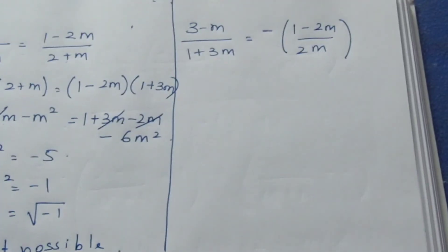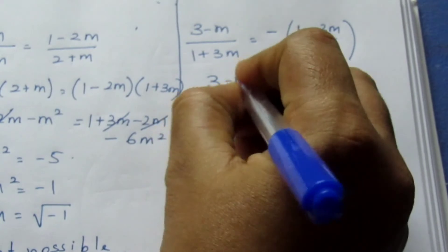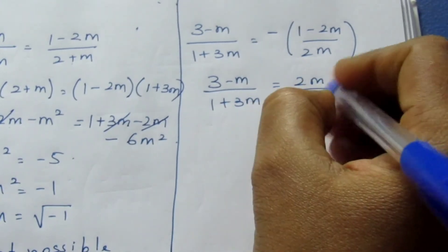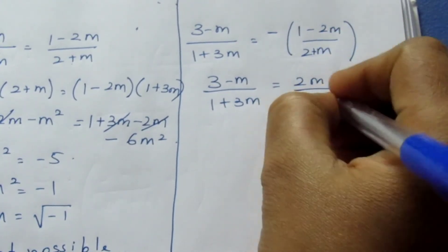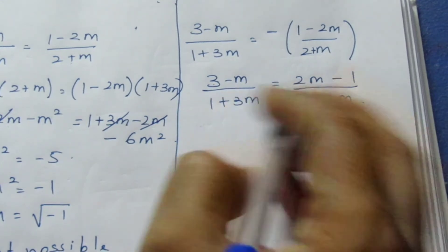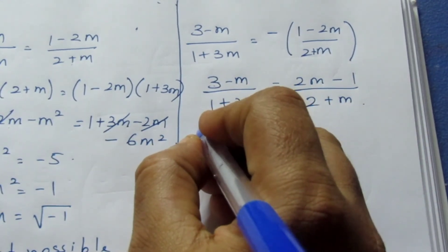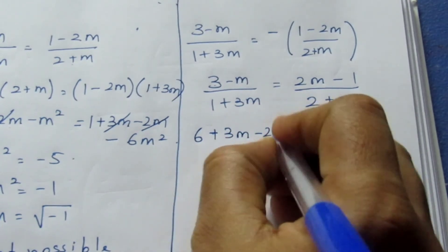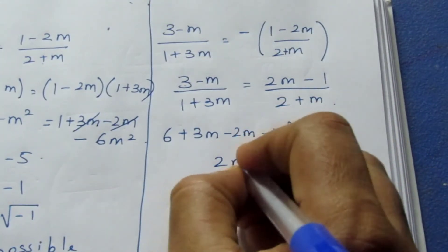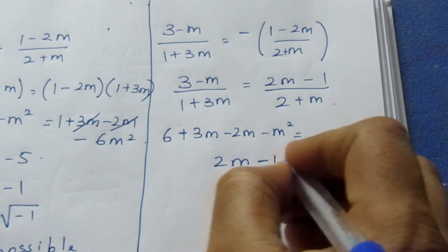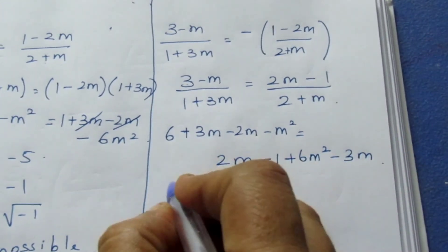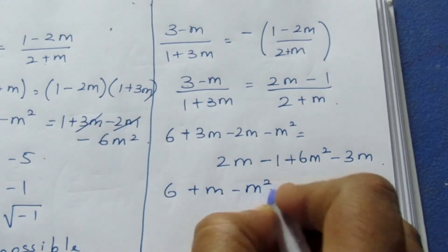We move on to the minus sign case. So (3 − m) / (1 + 3m) = (2m − 1) / (2 + m), taking the minus inside. Cross-multiplying: (3 − m)(2 + m) = (2m − 1)(1 + 3m). Expanding: 6 + 3m − 2m − m² = 2m + 6m² − 1 − 3m. Solving like terms: 6 + m − m² = 6m² − m − 1.